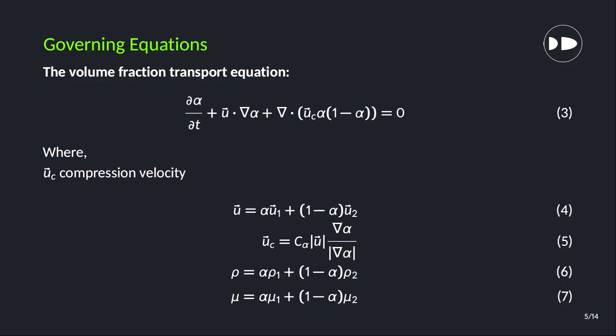Alpha always stays between 0 and 1, where 0 defines one phase and 1 defines another phase. Here, uc is the compression velocity which will maintain the sharp interface between two phases. Weighted average velocity, density, and viscosity are calculated during the simulation. You can search for more theory if you want.